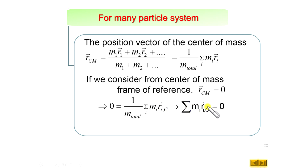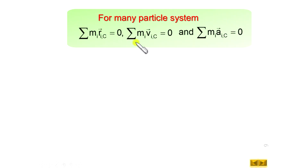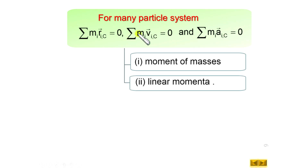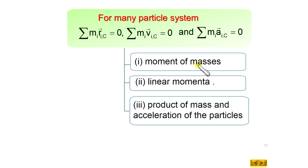Now if we differentiate this equation with respect to time we get the velocity term, so inside the sigma we have m_i × v_i_c = 0. If we differentiate again we get the acceleration term. So we have three results: Σ(m·r) = 0 (moment of masses), Σ(m·v) = 0 (linear momentum), and Σ(m·a) = 0 (summation of internal forces). Remember, we have calculated all these quantities with respect to the center of mass.